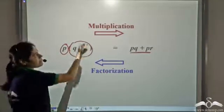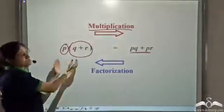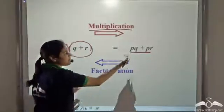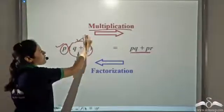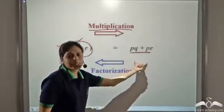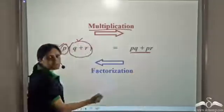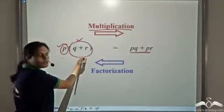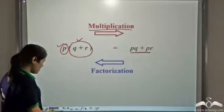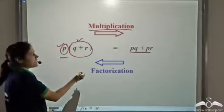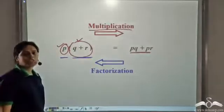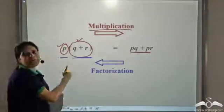When we multiply things, we combine expressions to get one expression, and when we factorize, we break them down into their component factors. So p into (q + r) gives us pq + pr — this is multiplication. When we break down pq + pr to get p and (q + r), this is factorization. The factors of pq + pr are p and (q + r) — so there are two factors.